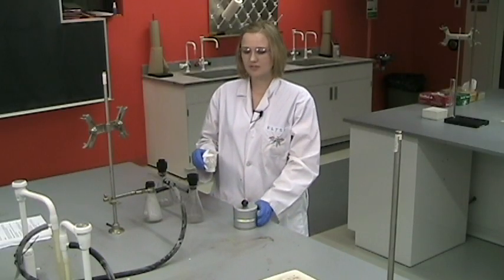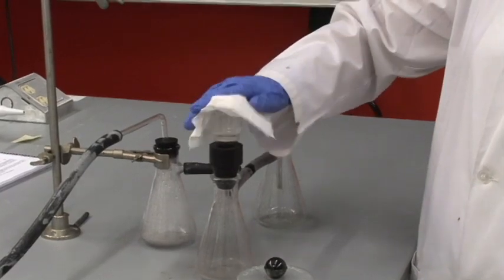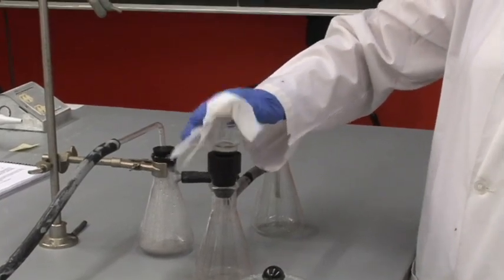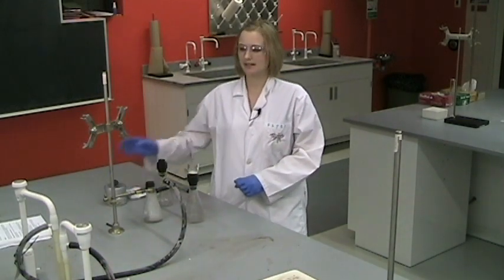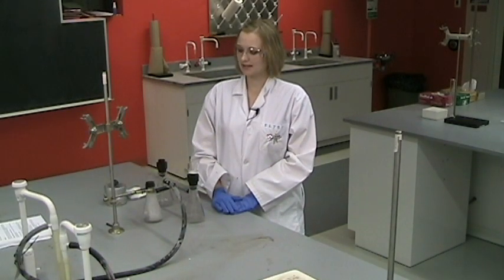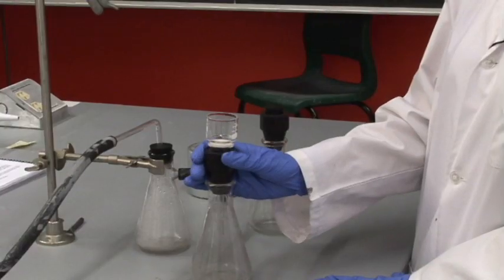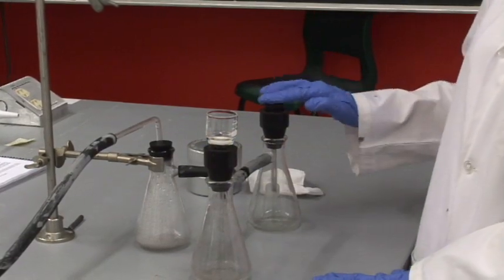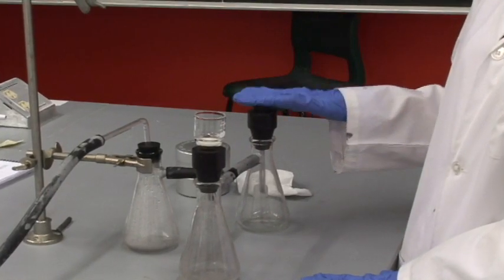When you are ready to start filtering, when you've taken the mass, you'll set the crucible onto the filtration apparatus and ask your TA for help in getting this set up and in how to use it. In this case, I'm demonstrating how to filter one sample, so I've plugged the other side, but normally you just would put the second crucible on this side here.